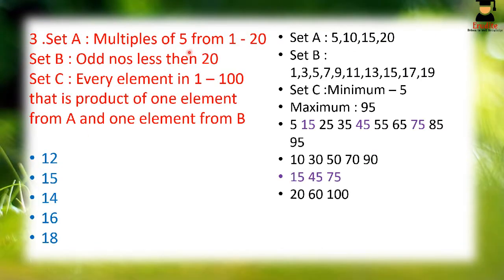The next question involves three sets. Set A contains multiples of 5 from 1 to 20: {5, 10, 15, 20}. Set B contains odd numbers less than 20: {1, 3, 5, 7, 9, 11, 13, 15, 17, 19} — 10 numbers in total. Set C contains every element from 1 to 100 that is the product of one element from A and one element from B.